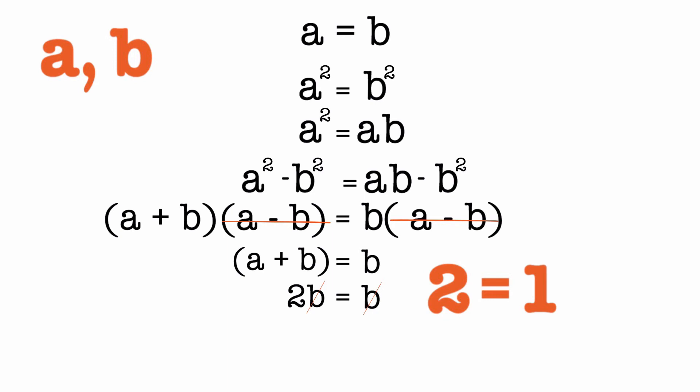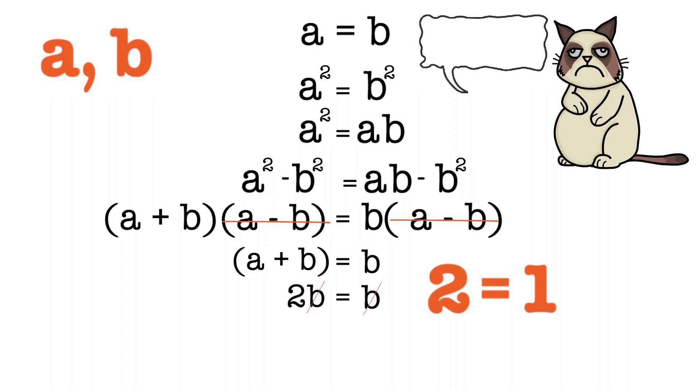Drum roll. So what is wrong out here? Did you figure it out? The problem in math comes when we divide by 0. When you divide by 0, all sorts of interesting things can happen. So where did we divide by 0?